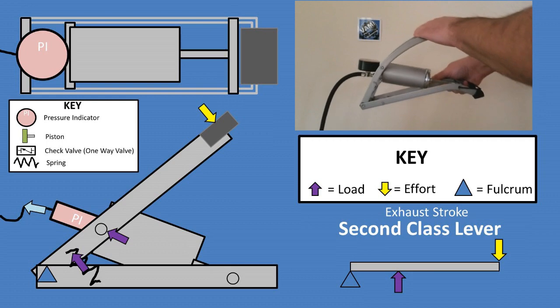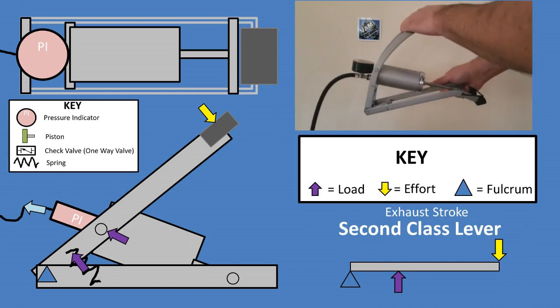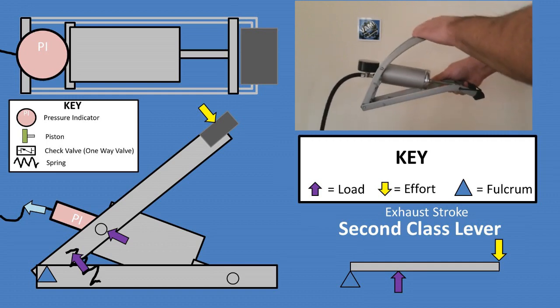In this case, the load is the piston being compressed and the spring being compressed to store potential energy, and the effort is on the opposite end, which is the force from the user's foot for compressing the bicycle pump.